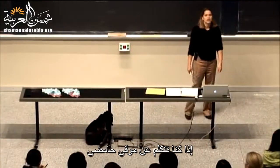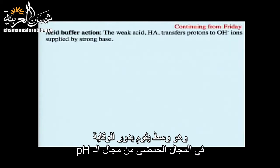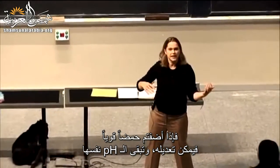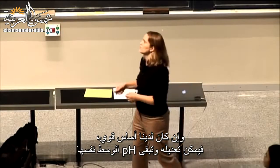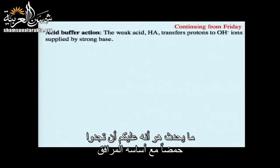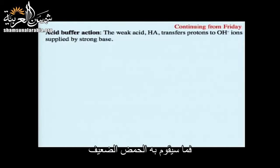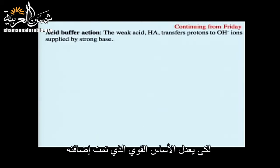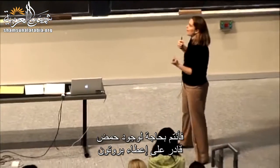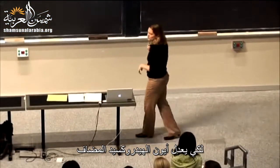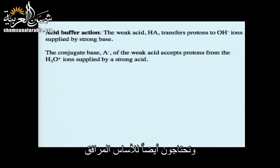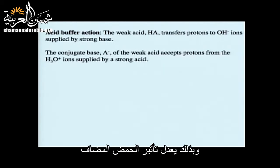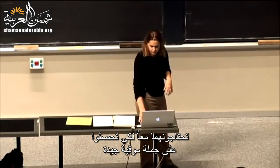An acid buffer is something that buffers on the acidic side of the pH range. You want to have play on both sides: if you add a strong acid, it can be neutralized so the pH stays the same; if you add a strong base, that'll be neutralized too. You need to have an acid and its conjugate base in the mixture. The weak acid transfers protons to hydroxide ions supplied by the strong base, neutralizing it. The conjugate base accepts protons if an acid is added, neutralizing that effect. So you need a weak acid and its conjugate base — both — to have a good buffer.